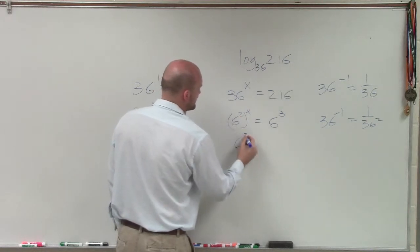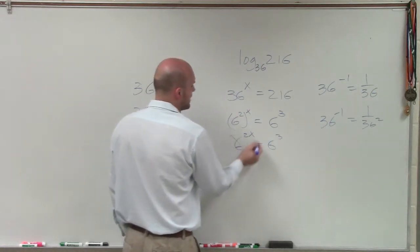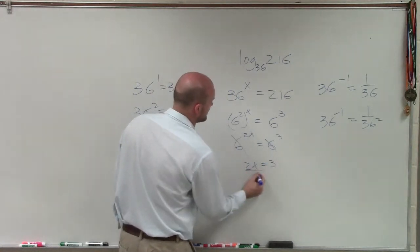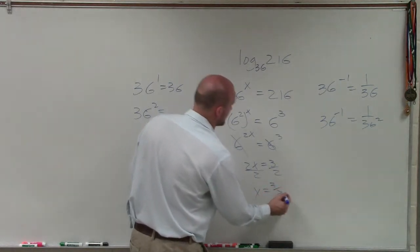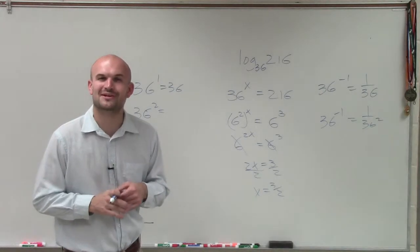Therefore, using the one-to-one property of exponents, we have 6^(2x) = 6^3, so 2x equals 3. Divide by 2, x equals 3 halves. So there you go, ladies and gentlemen. That is how you evaluate a log without a calculator. Thanks.